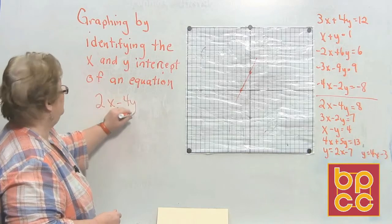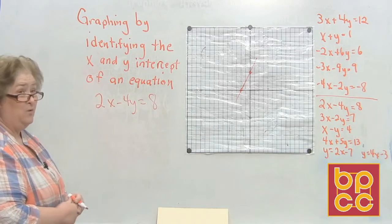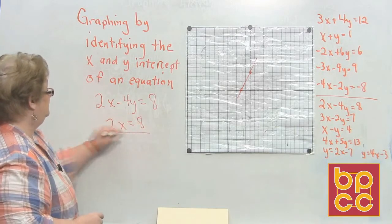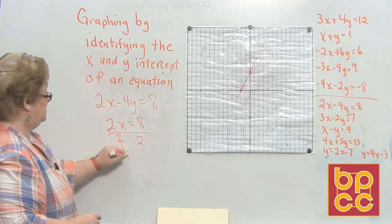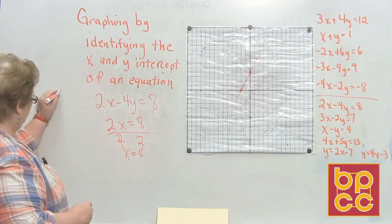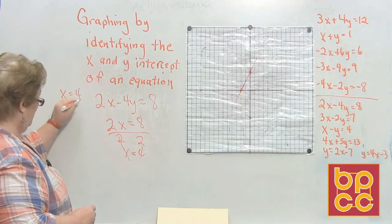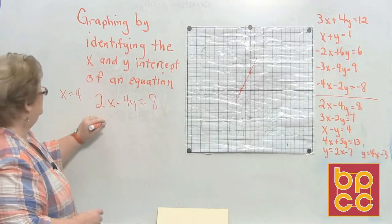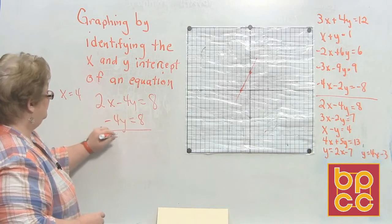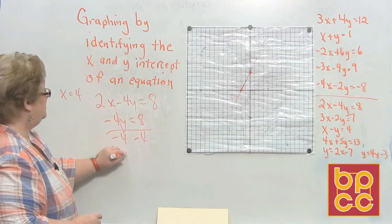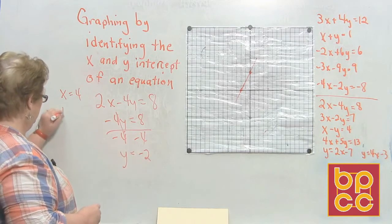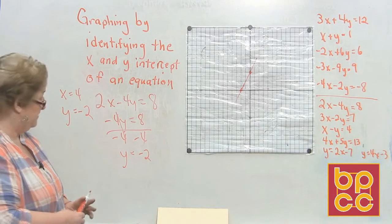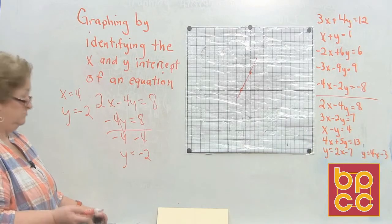First: 2x minus 4y equals 8. To find the x-intercept, cover y — 2x equals 8, divide by 2, so x equals 4. For the y-intercept, cover x — negative 4y equals 8, divide by negative 4, so y equals negative 2. I could have graphed that, but we won't this time. The line crosses the x-axis at 4 and the y-axis at negative 2.